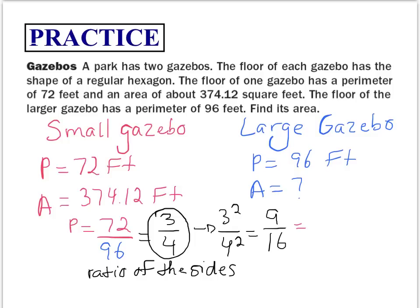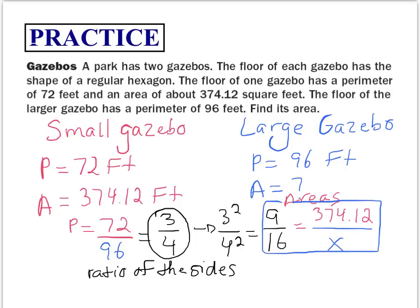We know 9 corresponds to the smaller gazebo, and the ratio of the areas is 9 over 16. The smaller gazebo has an area of 374.12 square feet. Setting up the proportion and cross-multiplying: 9x equals 16 times 374.12, which is 5,985.92. Dividing both sides by 9, we get x equals 665 square feet.